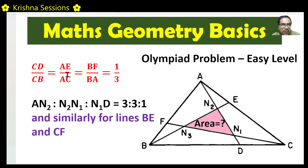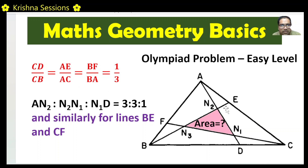A triangle is given and we have to find the area of some part of this triangle. What is given is CD/CB = 1/3, meaning the line drawn from A to the opposite side divides it in the ratio 1:3. Similarly, AE/AC — the line from B to the opposite side — also divides in the ratio 1:3. And BF/BA, whatever is drawn from C, also divides in the ratio 1:3.